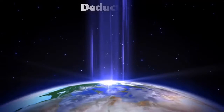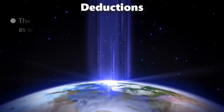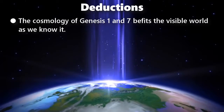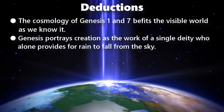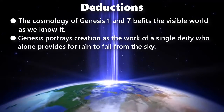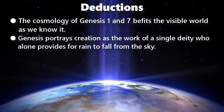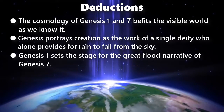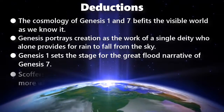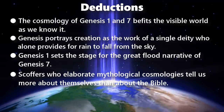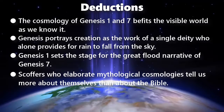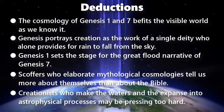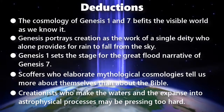From these verses we can make five deductions. The cosmology of Genesis 1 and 7 befits the visible world as we know it. Genesis portrays the creation as the work of a single deity who alone provides for rain to fall from the sky. Genesis chapter 1 sets the stage for the great flood narrative of Genesis chapter 7. Scoffers who elaborate mythological cosmologies tell us more about themselves than about the Bible. Creationists who make the waters and the expanse into astrophysical processes may be pressing too hard.